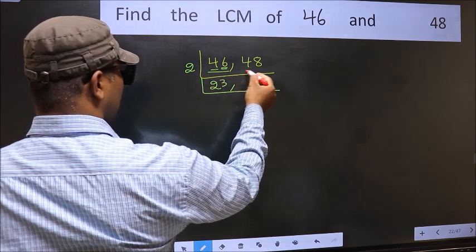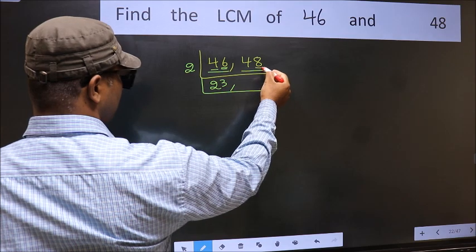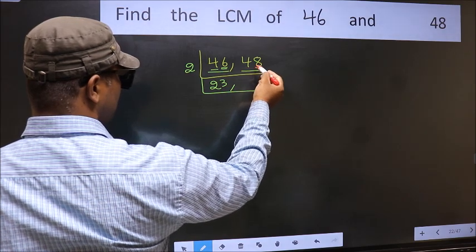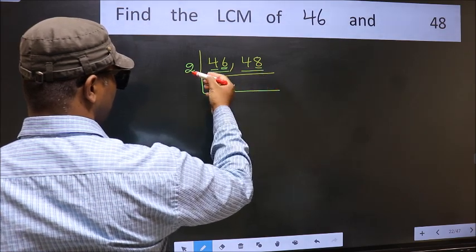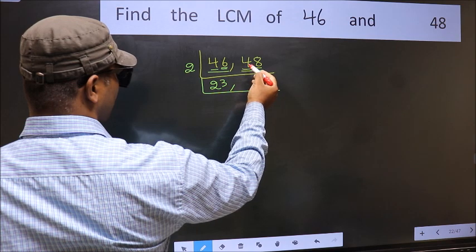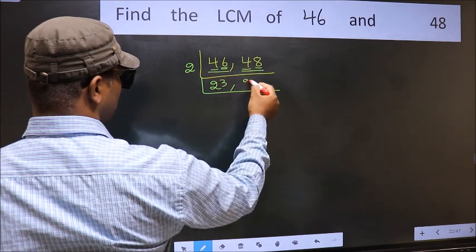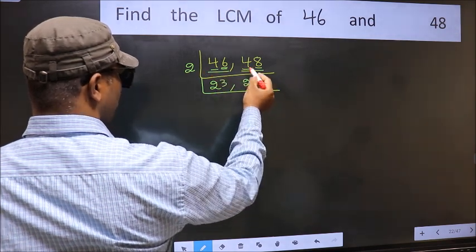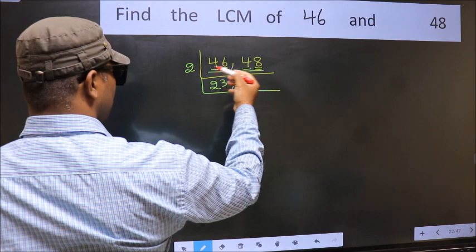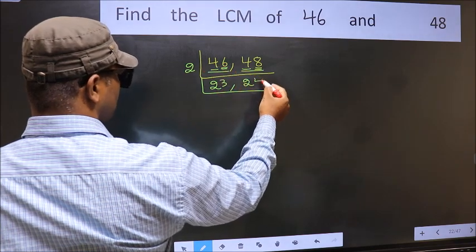Now the other number is 48. The last digit is 8, so this is divisible by 2. The first digit is 4 — 2 × 2 = 4. The other digit is 8 — we get 8 in the 2 table as 2 × 4 = 8.